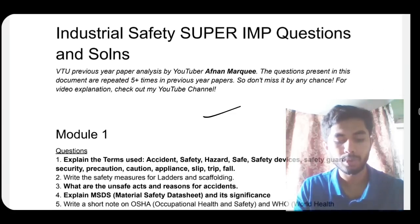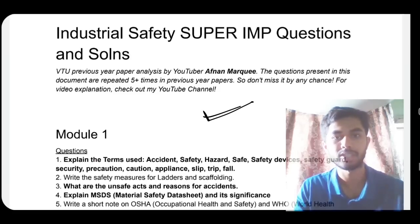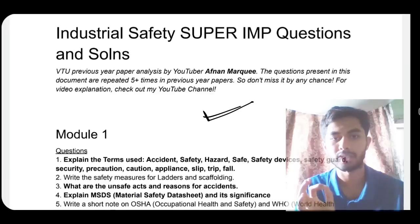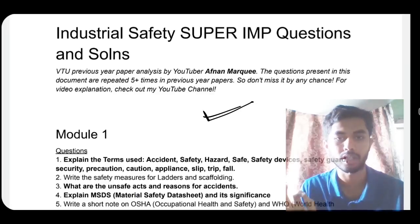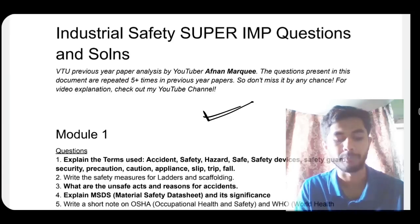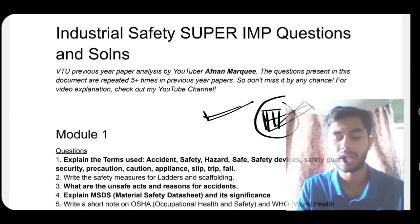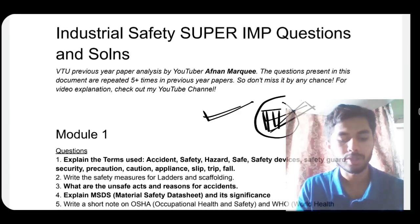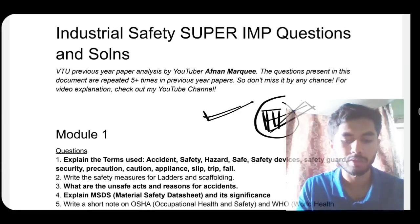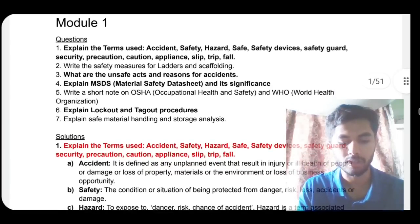Industrial safety is a very easy subject — there is nothing that has to be deeply understood. You just have to know the ways to keep things in mind. I'll not be explaining anything; I'll be telling you how to memorize things. If you want, just download the document. I'm going to tell you what tricks you need to use to keep things in mind — that's how you remember points, just by reading them.